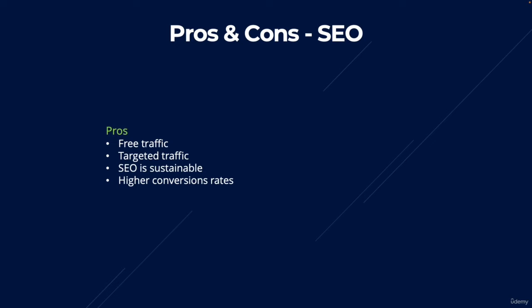Another pro of SEO is that it typically leads to higher conversion rates, because users have more trust in websites that appear in the organic section. The fifth benefit is that you have the opportunity to sell your website for a 34x multiple. The reason is that your website is the core asset — your high Google rankings lead to free traffic. Whereas if your traffic source is based on paid ads like Google Ads, when you sell your website, you're not selling the Google Ads account with it.